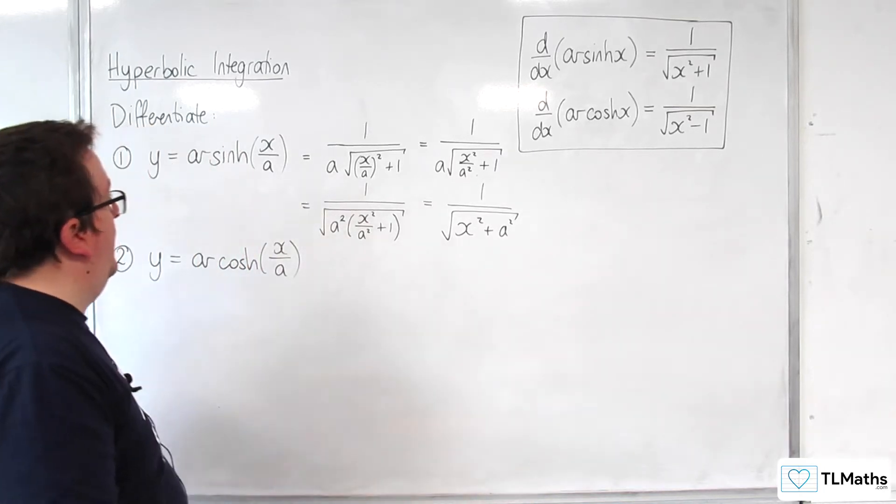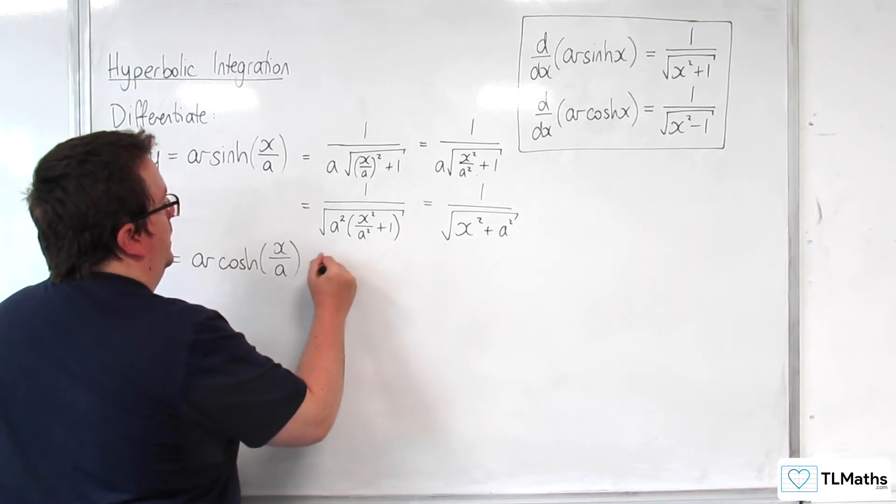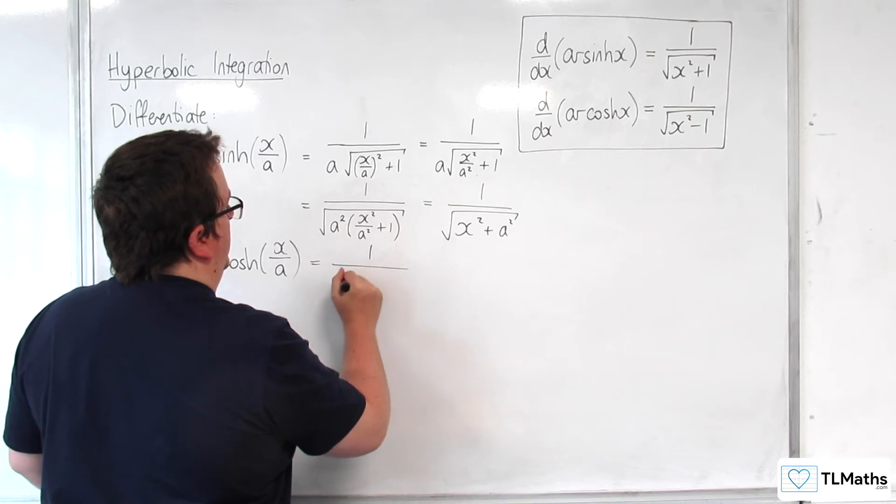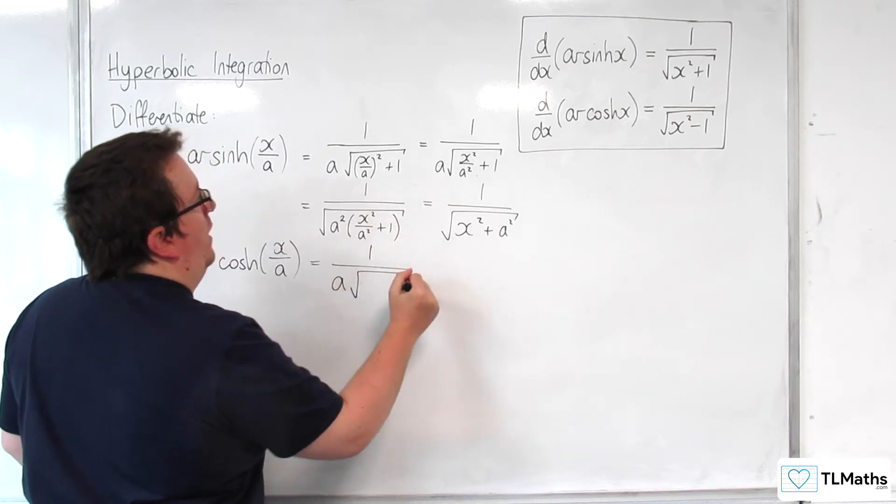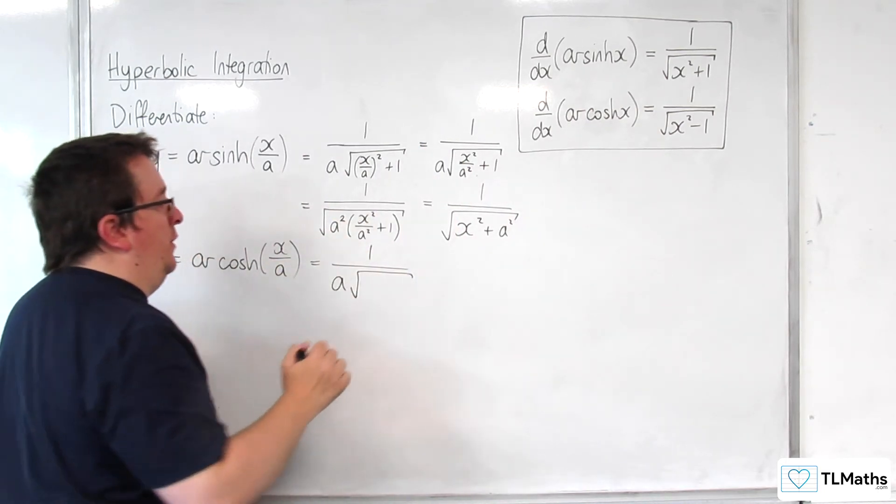Now we can do a similar thing, similar process, with this one here. The derivative of the inside is 1 over a, and that's going to multiply with 1 over this, where the x is replaced with x over a.